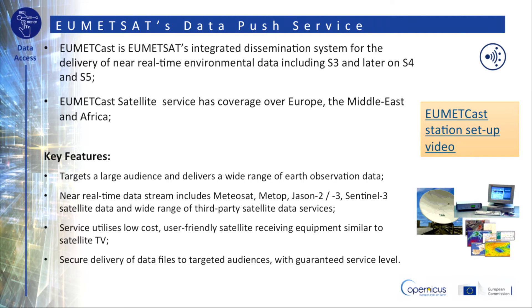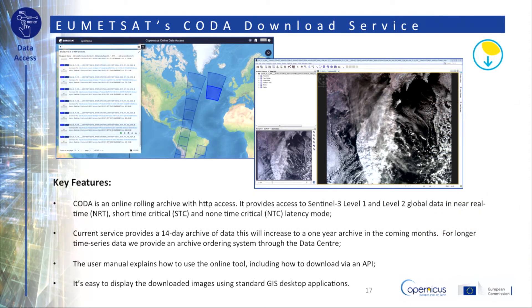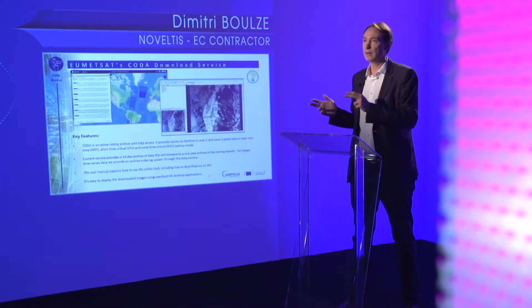EUMETCast provides a secure delivery of data files to a target audience with a guaranteed service level. Then we find the new online data access, CODA — an online rolling archive with HTTP access. It provides access to Sentinel-3 Level 1 and Level 2 global data in near real-time, short-time critical and non-time critical latency modes. The current service provides a 14-day archive of data, which will increase to a 1-year archive in the coming months. For longer time series data, EUMETSAT provides an archive ordering system through the data center, and the user manual explains how to use the online tool, including how to download everything via an API.